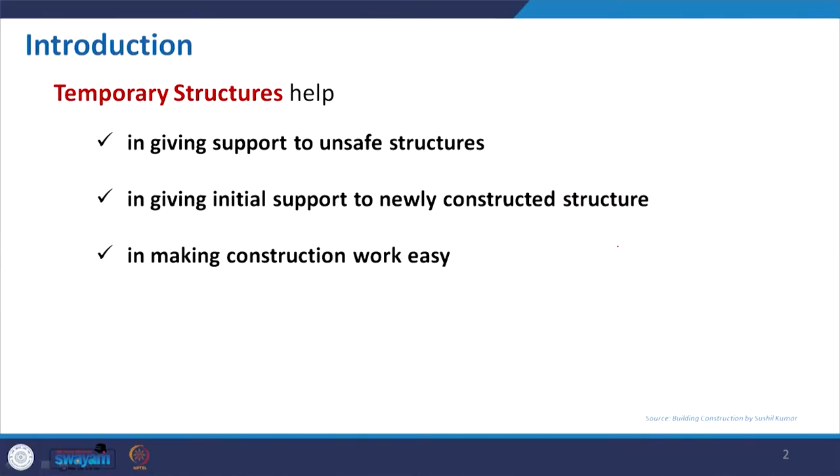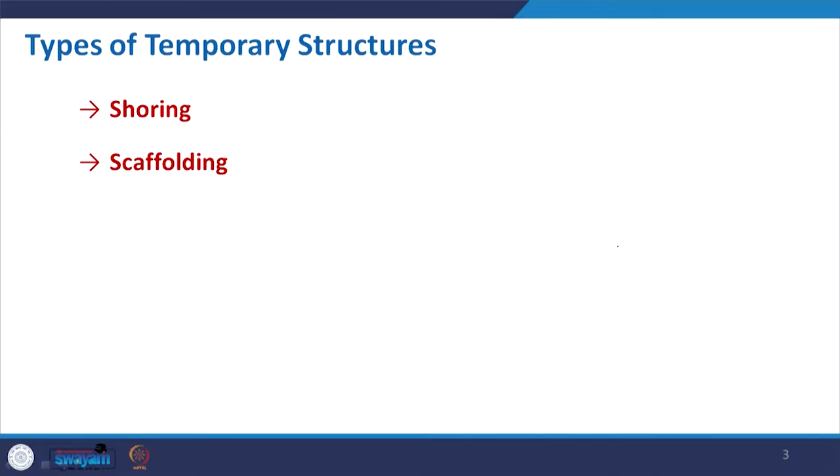Temporary structures also help in making construction work easy. When we see a high-rise building, the question comes: how does a person paint at the height of the 30th floor, or do some repair work on the external wall? We have seen arrangements made with bamboo or steel components to make some platform — technically we call this scaffolding. Broadly, temporary structures are classified into two categories: shoring and scaffolding.